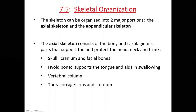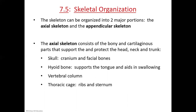Hi, everyone. In this lecture, this is the second lecture for Chapter 7 on the skeletal system, we will be going over skeletal organization and also the bones of the skull. For skeletal organization, we typically organize the skeleton into two main groupings called axial and appendicular. Axial bones are located along the main central axis of the body — all the bones and cartilages that support and protect your head, your neck, and the trunk of your body.